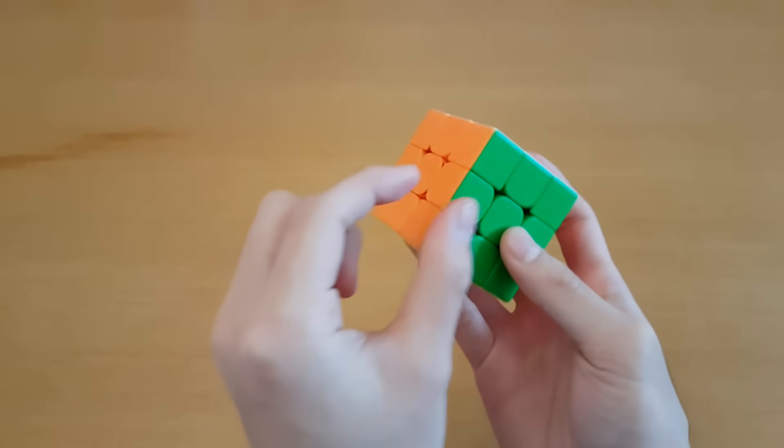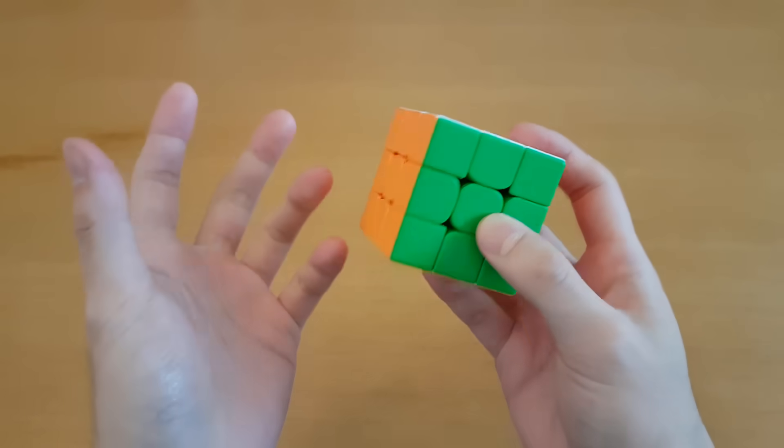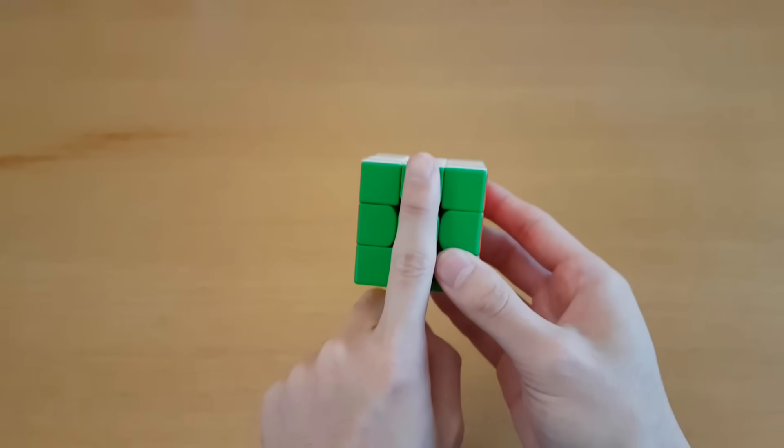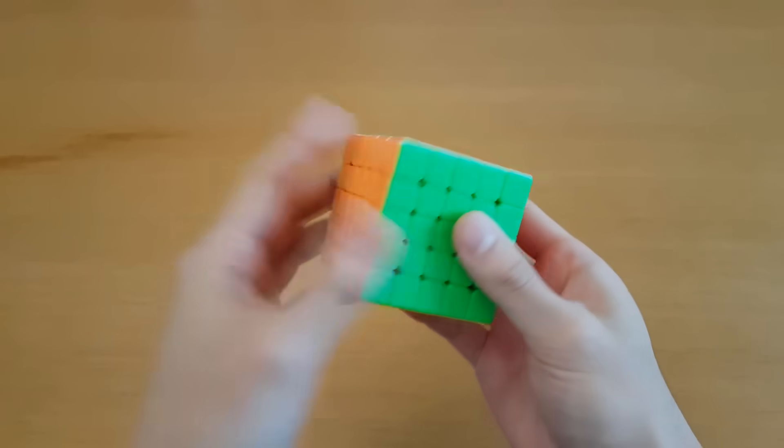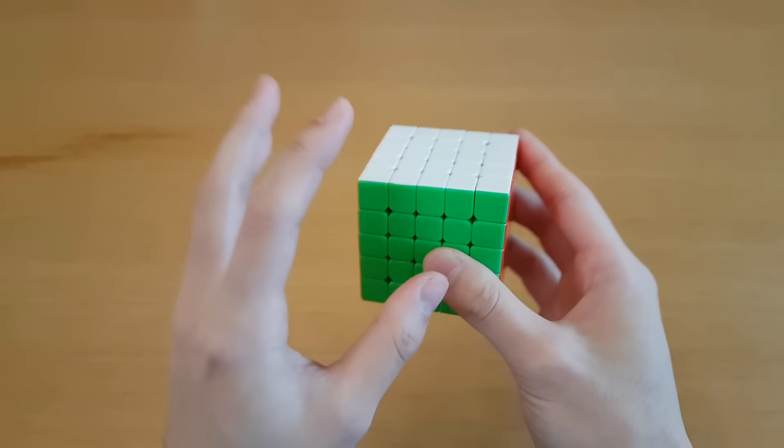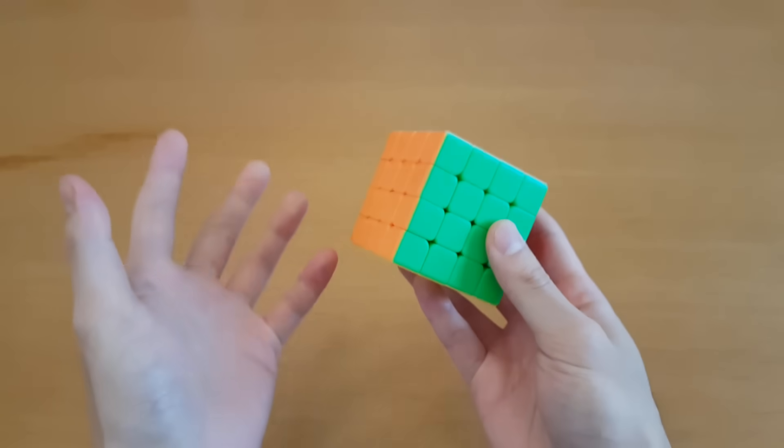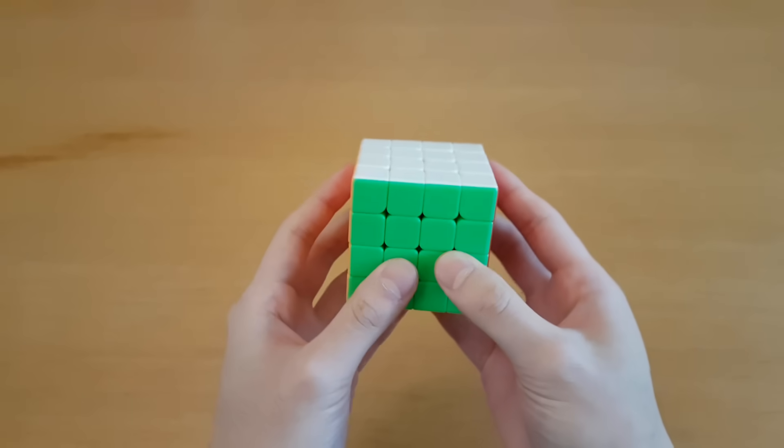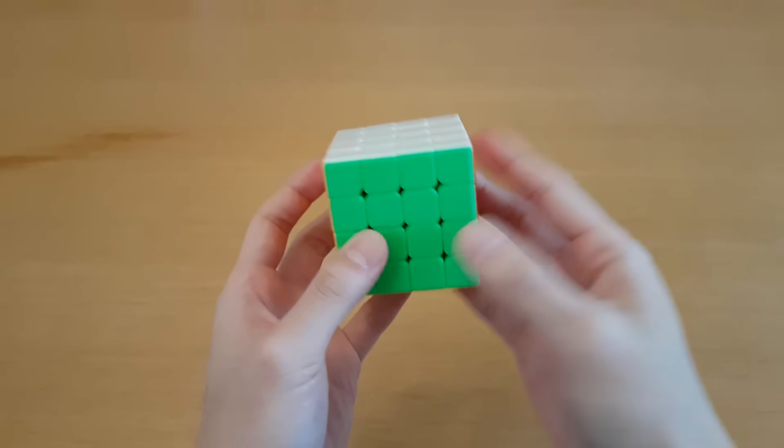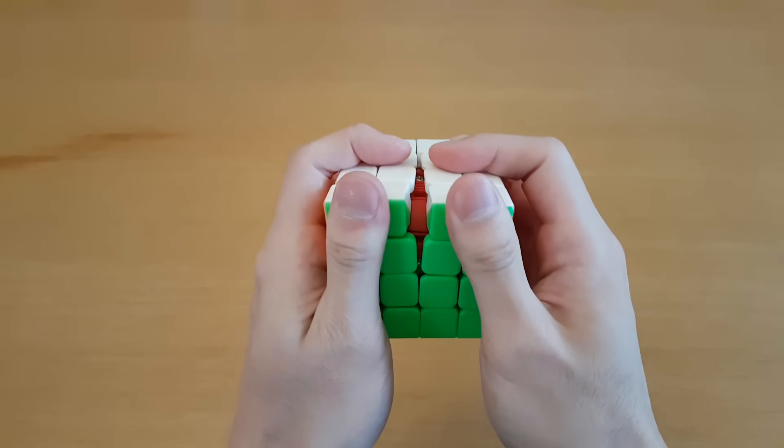This idea of a core, edges, and things between them only works with an odd numbered cube, because there's a layer in the middle for there to be a core. The 5x5 cube actually works the same way, just with more pieces. But on an even numbered cube, things are a bit different. There's no middle layer for there to be a core, so instead there's a core on the inside.